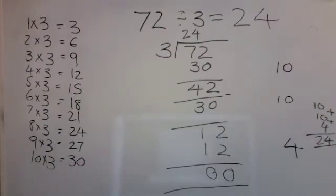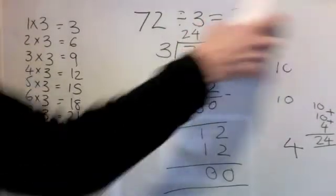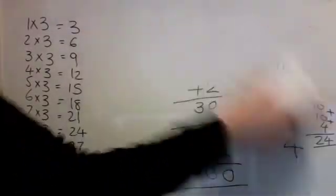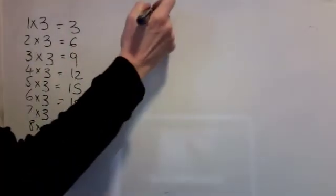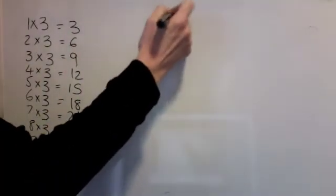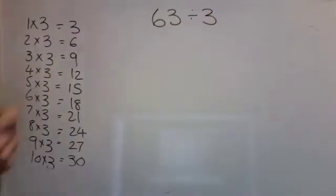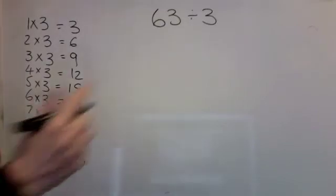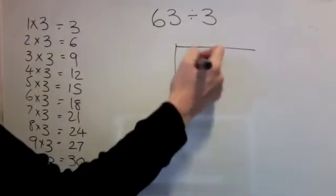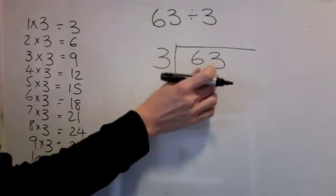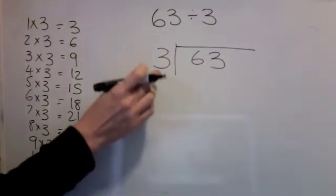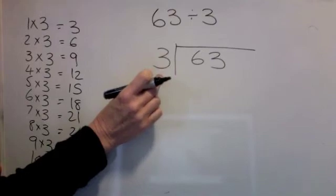Let's try another one. We'll use the 3 times table again because I've already got it written there. 63 divided by 3. Step 1: find your 3 times table up to 10. Step 2: write out your bus stop, with the number you're dividing inside the bus stop, and the number you're dividing by outside the bus stop.